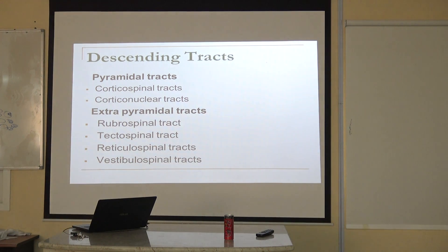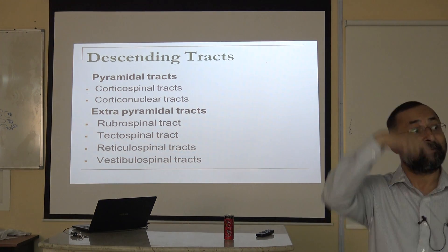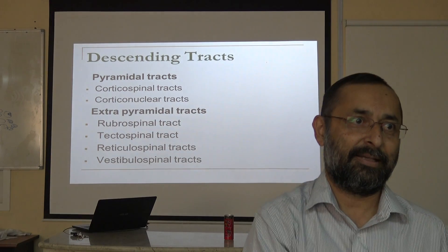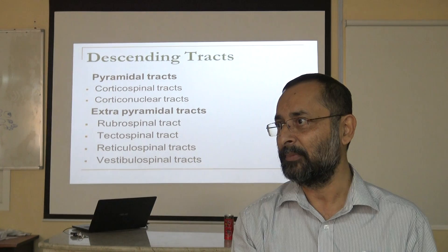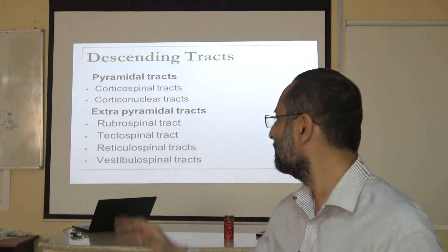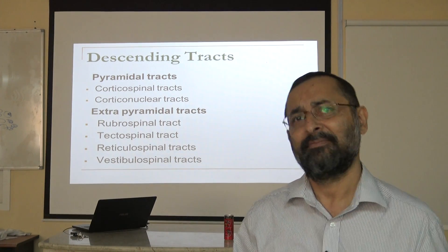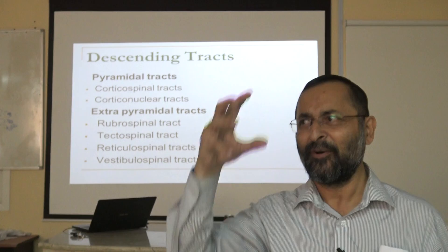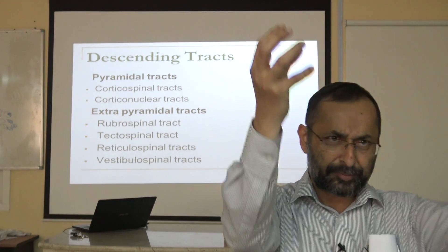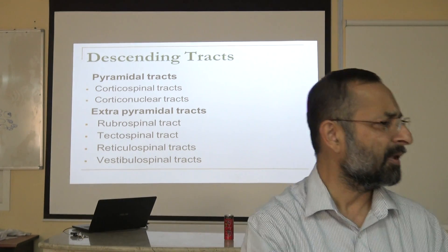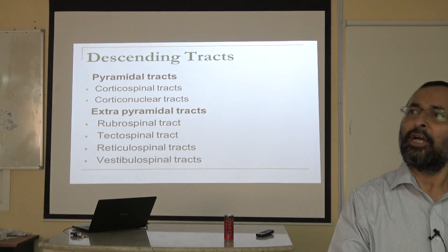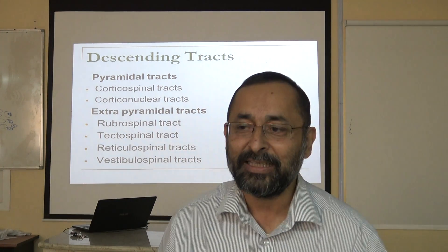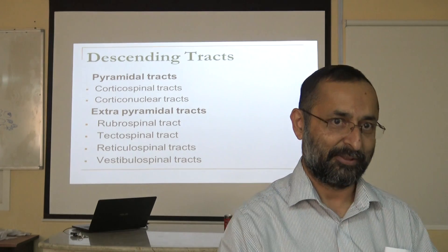The second extrapyramidal tract is the tectospinal — from the tectum to the spinal cord. The third is the reticulospinal — from the reticular formation: fibers start from different areas of the reticular formation and go down to the spinal cord. The names are straightforward and easy to remember.